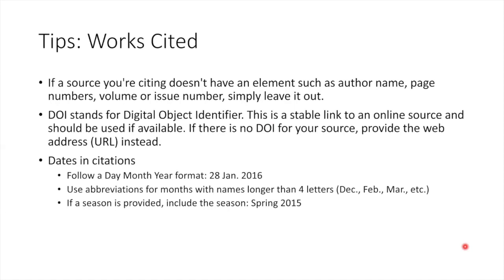As we saw in that final example, if a source doesn't include an element such as author name, publication date, or issue number, you will simply omit that element. Remember the DOI which came at the end of our citation for the database article? DOI stands for Digital Object Identifier. It's a stable link to an online source, and it should be used if available. If there is no DOI for your source, provide the web address instead. When it comes to dates, such as publication dates and access dates, remember to use the day, month, year format. Use abbreviations for months with names longer than four letters, such as December and February. Some publications list a season rather than a month, and it's fine to use that as the publication date as well.